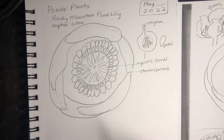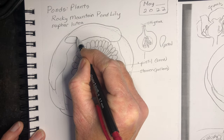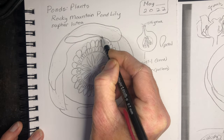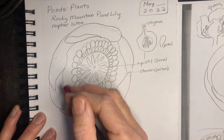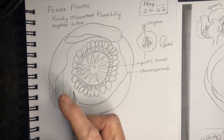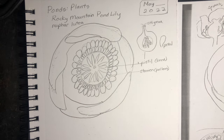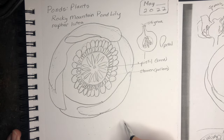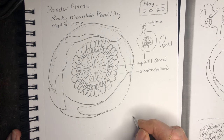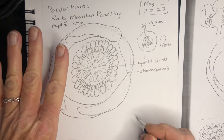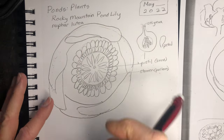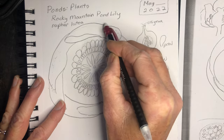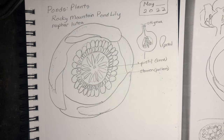We'll go ahead and paint those in a little bit, but we could show that they overlap and aren't just flat. Now we'll draw what this pond lily would look like in the water. This is kind of life-size — it could be a little smaller or a little bigger than this. They can be like 7 to 12 centimeters across. You can draw a line from where one edge ends to the other edge to show the length and width.